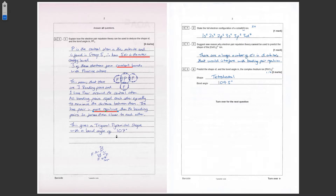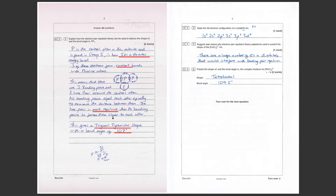A more three-dimensional diagram shows the lone pair at the top and the three bonding pairs below. This gives a trigonal pyramidal shape — it's really important to name the shape — and the bond angle referenced in the question is 107 degrees. Don't be afraid to include a diagram to back up what you're saying and show the examiner you understand VSEPR. The six marks are dotted throughout each of these explanations.